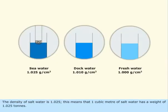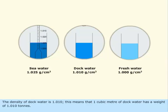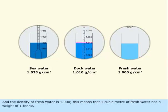The density of salt water is 1.025, which means that 1 cubic meter of salt water has a weight of 1.025 tons. The density of dock water is 1.01, which means that 1 cubic meter of dock water has a weight of 1.01 tons. And the density of fresh water is 1, which means that 1 cubic meter of fresh water has a weight of 1 ton.